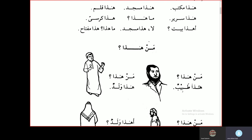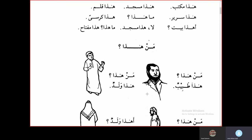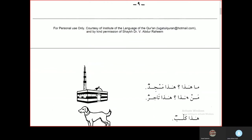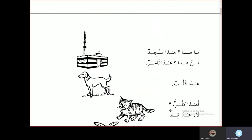Now we'll study Man hadha? — Who is this? Hadha tabibun — this is a doctor. Man hadha? Hadha waladun — this is a boy. Man hadha? Hadha talibun — this is a student. Ahadha waladun? — Is this a boy? La, hadha rajulun — No, this is a man. Ma hadha? Hadha masjidun — this is a mosque. Man hadha? Hadha tajirun — this is a merchant.